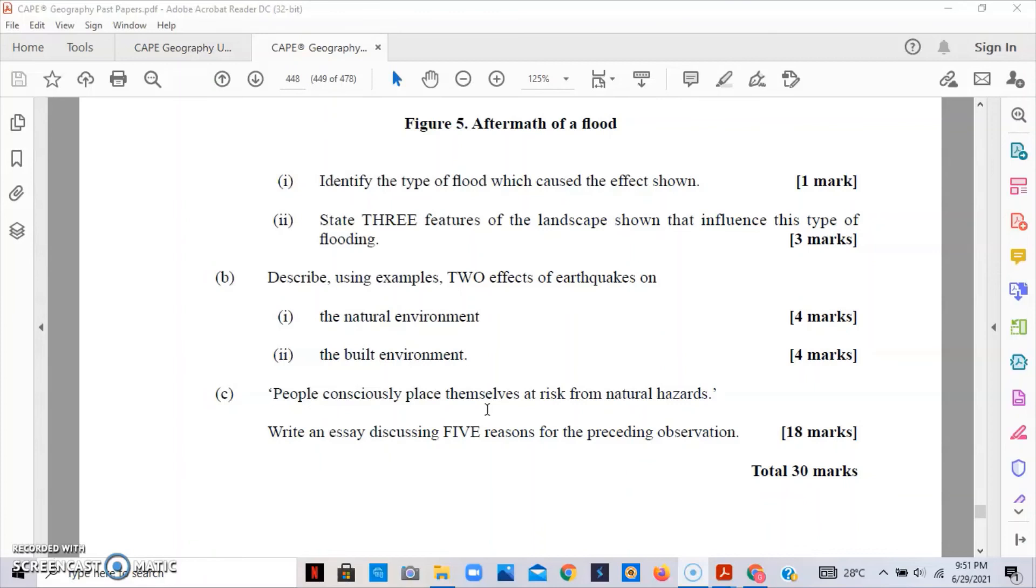Another point is that some people accept the risks associated with the area so that they can reap the benefits of living in the region. For example, we know that the Caribbean experiences hurricanes during June and November every year, and some of these islands are significantly affected by hurricanes. Yet still we stay on these islands because we want to reap the benefits. A lot of persons know we experience hurricanes during the summer period and they still come to the Caribbean area because they want to reap the benefits here. Once you're able to expound or discuss these five points or any other relevant points, you should be able to get your 18 marks.